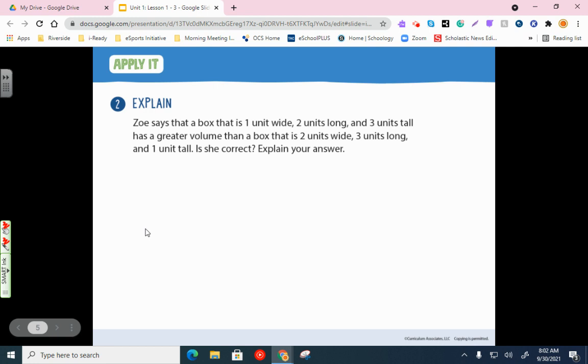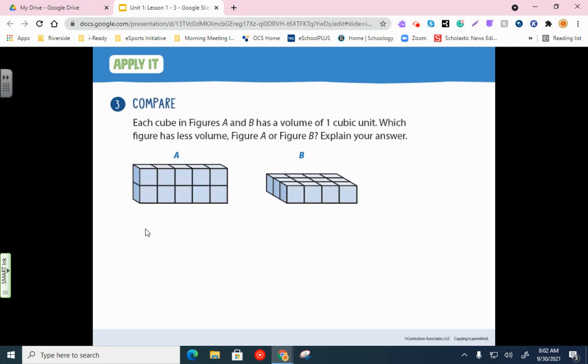All right, let's look at number three. All right, each cube in figures A and B has a volume of one cubic unit. All right, so we can know that for sure. Which figure has less volume? Figure A or figure B. Let's figure out the volume. A is pretty simple. Both these are pretty simple. You can count them up. One, two, three, four, five, six, seven, eight, nine, ten. You also could have gone two times five. But either way, this one is ten cubic units.